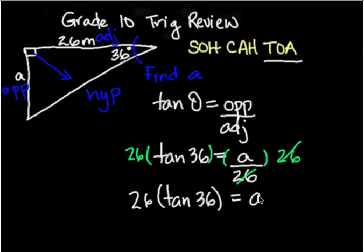Remember that tan 36 is its own entity by itself. This reduces to a particular decimal that your calculator will give you. So in your calculator, you type in 26 times tan 36.